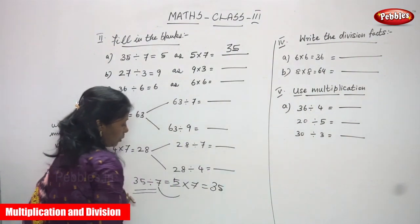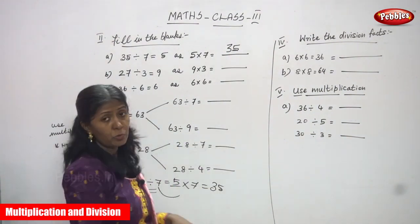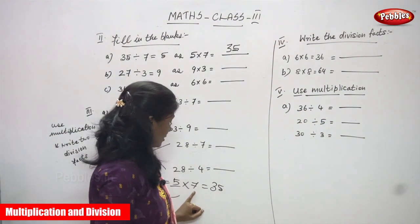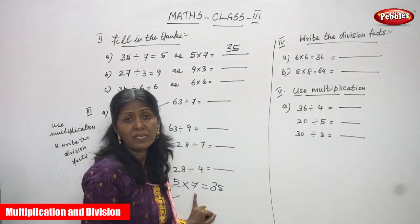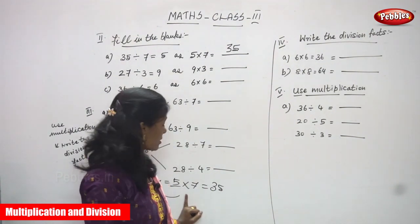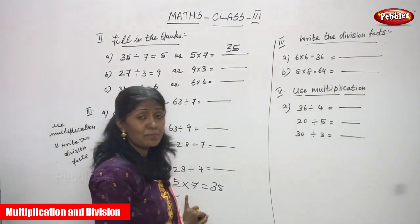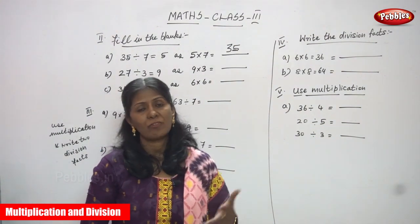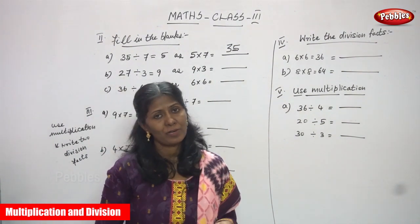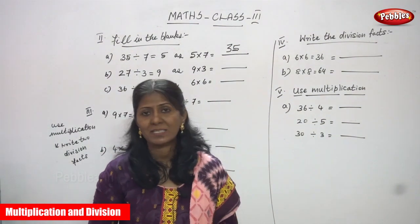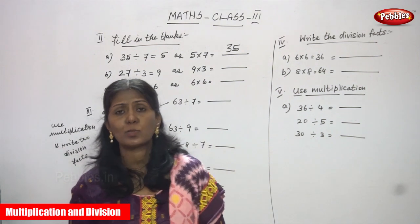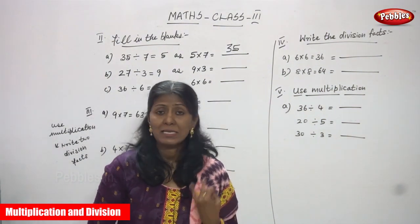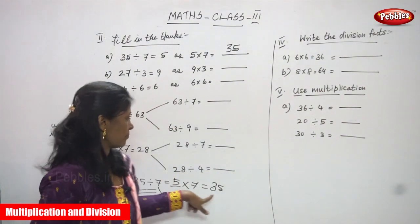Even if you want to verify, you can say the 7th table, or you can use the simpler 5th table: 1 five is 5, 2 fives are 10, 3 fives are 15, 4 fives are 20, 5 fives are 25, 6 fives are 30, 7 fives are 35.